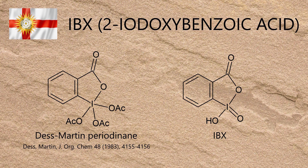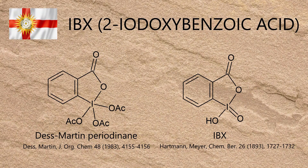The preparation of Dess-Martin periodinane was first reported in 1983, making it a relatively new addition to the toolbox of organic chemistry reagents. IBX was first reported 90 years earlier in 1893, and until recent times it was mostly seen as a curiosity, due to its near total insolubility in organic solvents other than DMSO, and the fact it has a reputation for being explosive under certain conditions. More on that at the end.